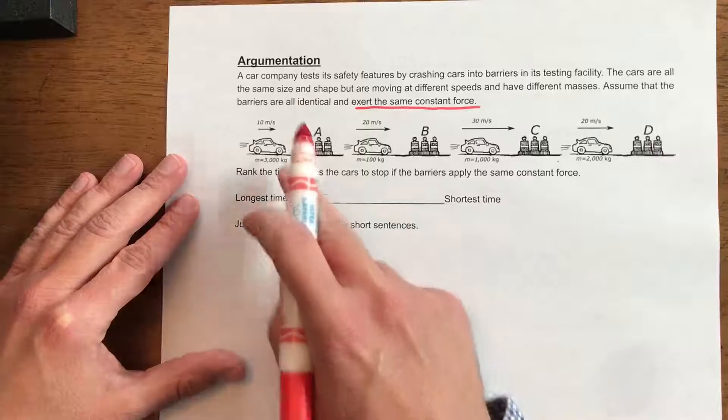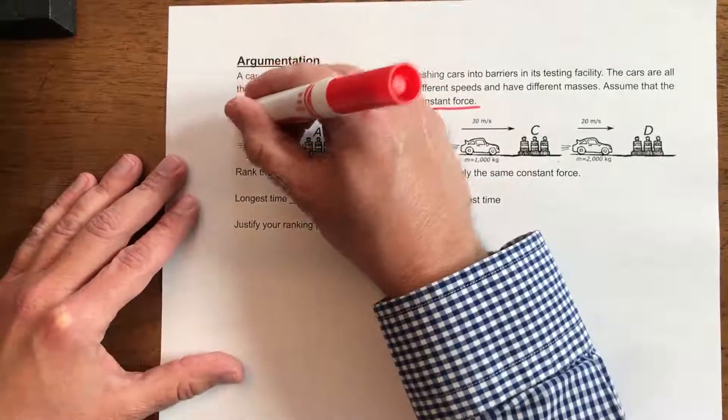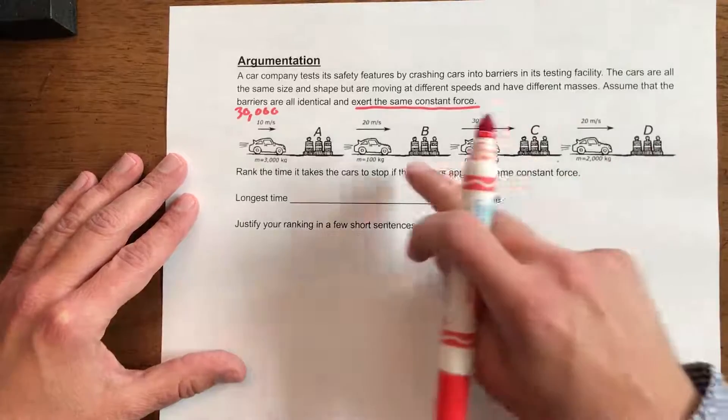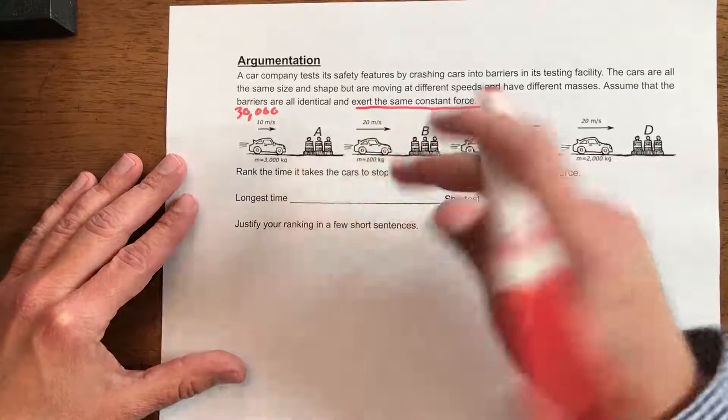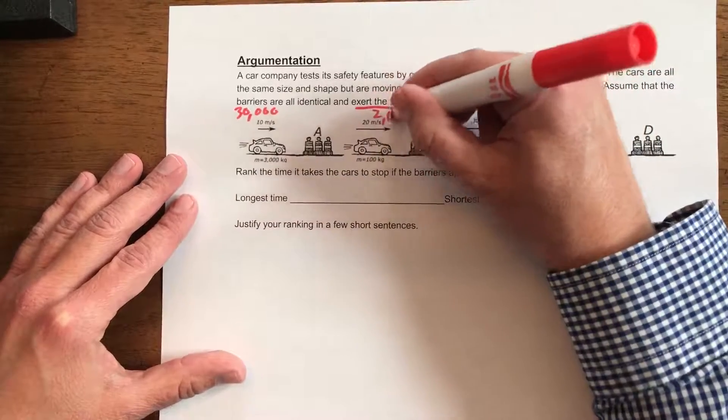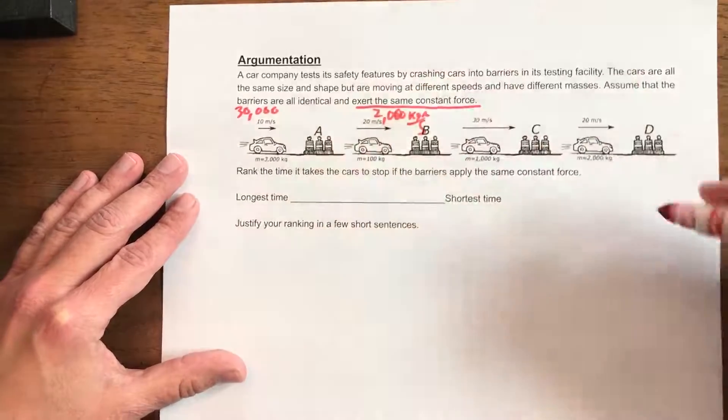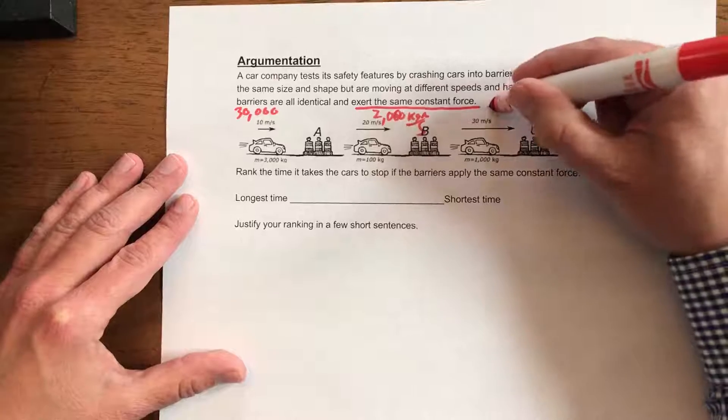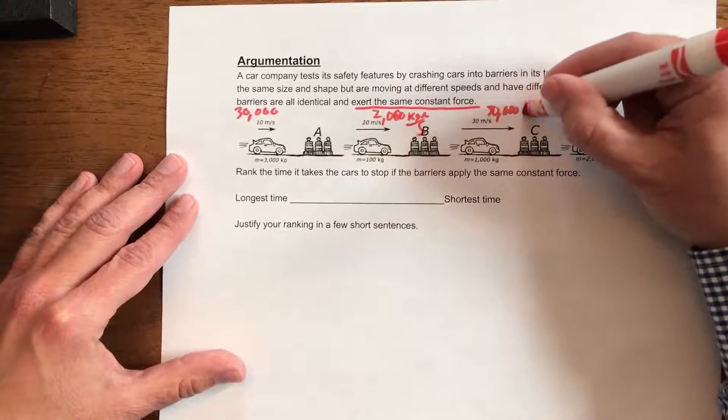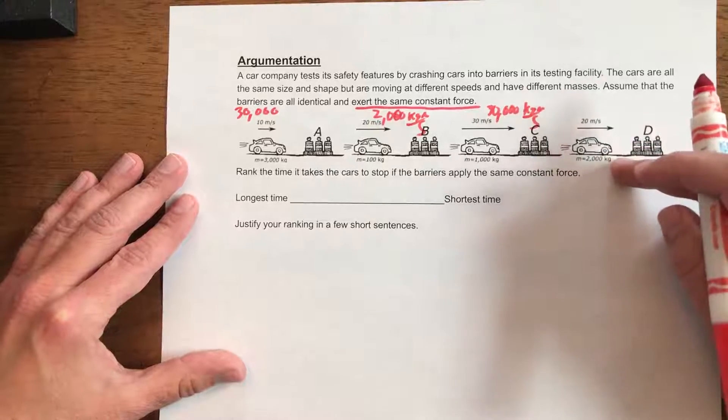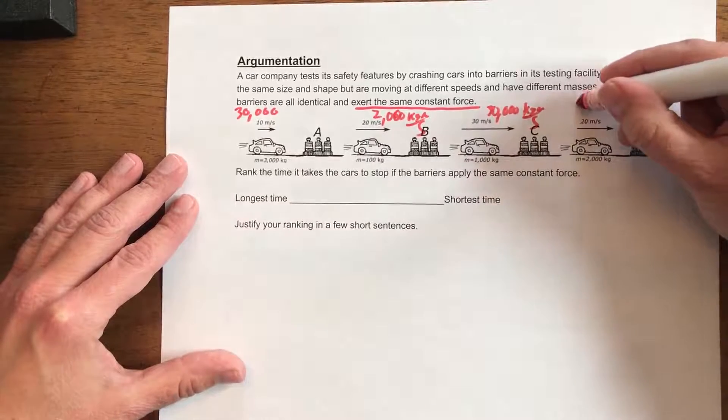So 3,000 times 10 is 30,000 kilograms meters per second momentum for that one. 20 meters per second times 100 kilograms would be 2,000 kilogram meters per second on this one. 30 times 1,000 is once again 30,000 kilogram meters per second of momentum.